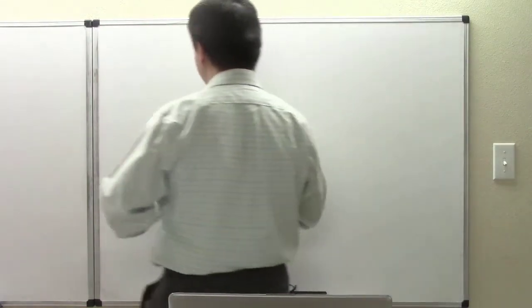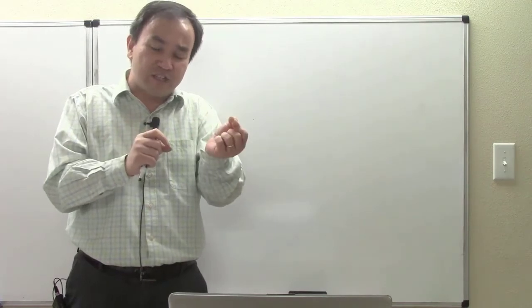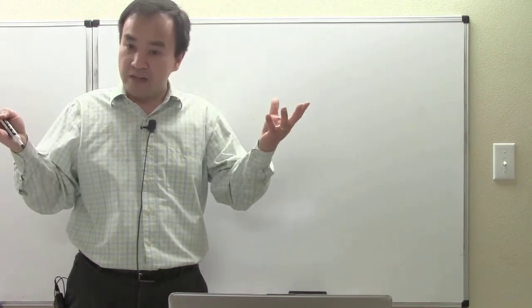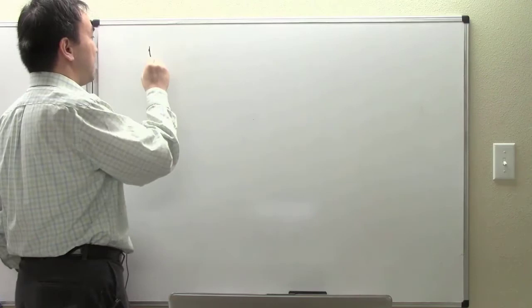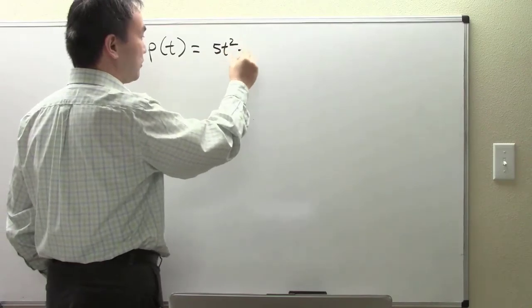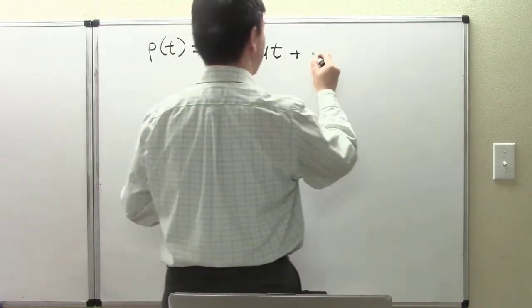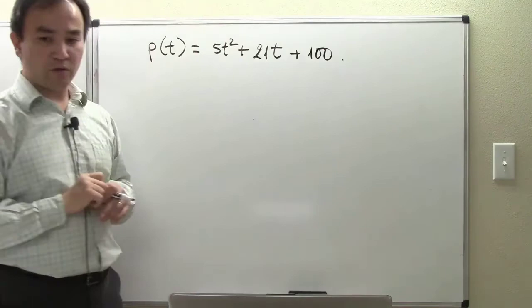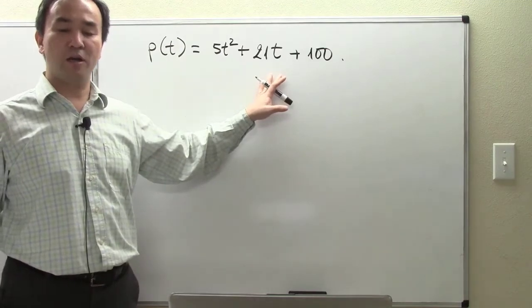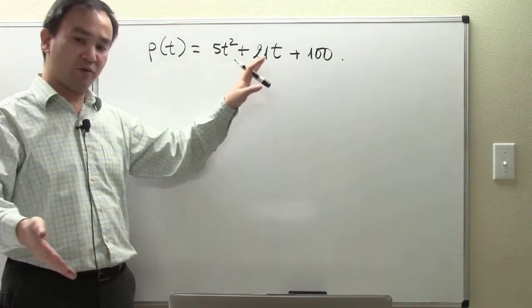Let me write that modeling function on the board. The population size at time t equals 5t² plus 21t plus 100. That's our modeling function. Our intention here is not to find out how the scientists came up with this modeling function - we simply accept that they have already done a lot of work to develop this. What we do now is help them apply our calculus understanding.